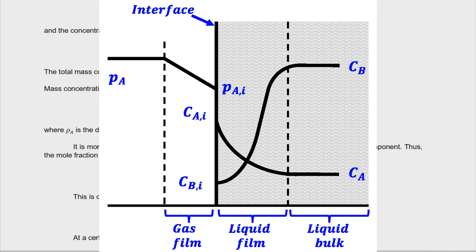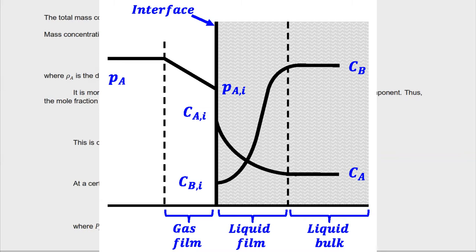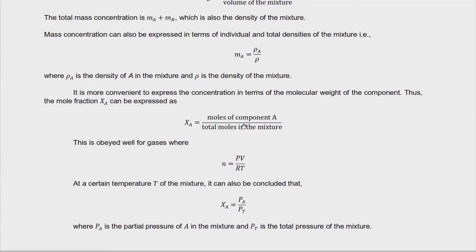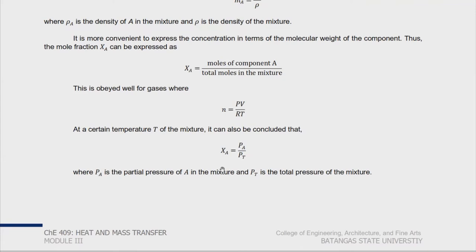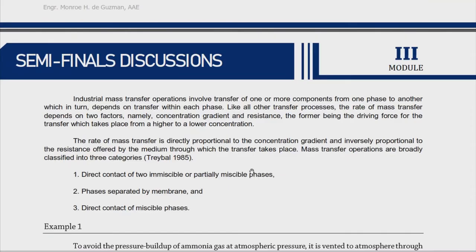Relating this to gases, since most of the time we will be dealing with gases, we know the ideal gas equation is PV = nRT. If we want to relate the pressure of a certain component to the total pressure of the system, the mole fraction can be expressed as the partial pressure of component A over the total pressure of the system. This also works for mixtures with more than two components — you just take the partial pressure of that component and divide by the whole system pressure.